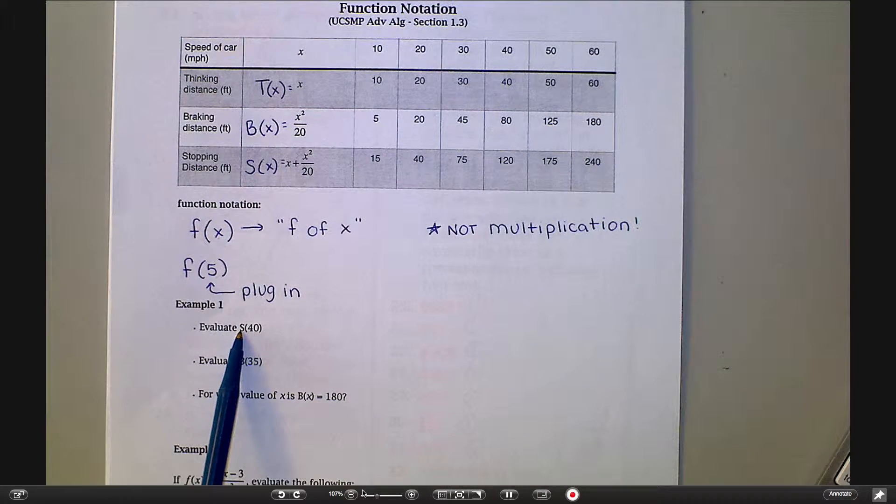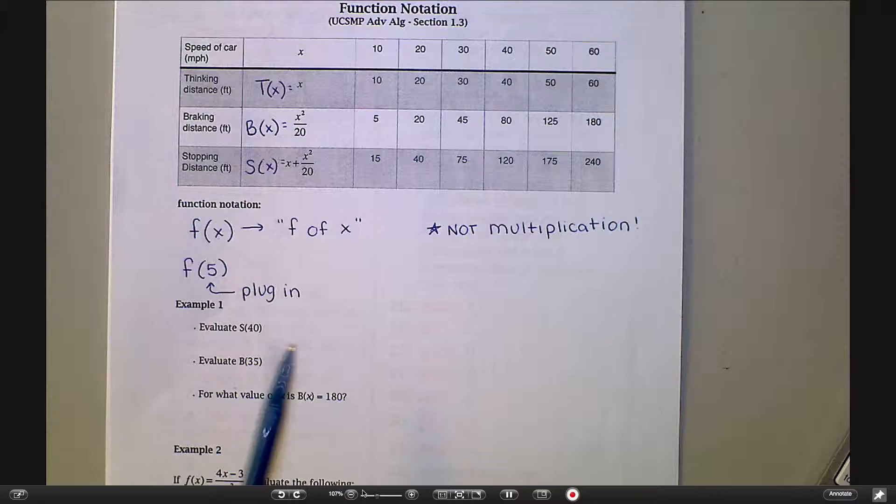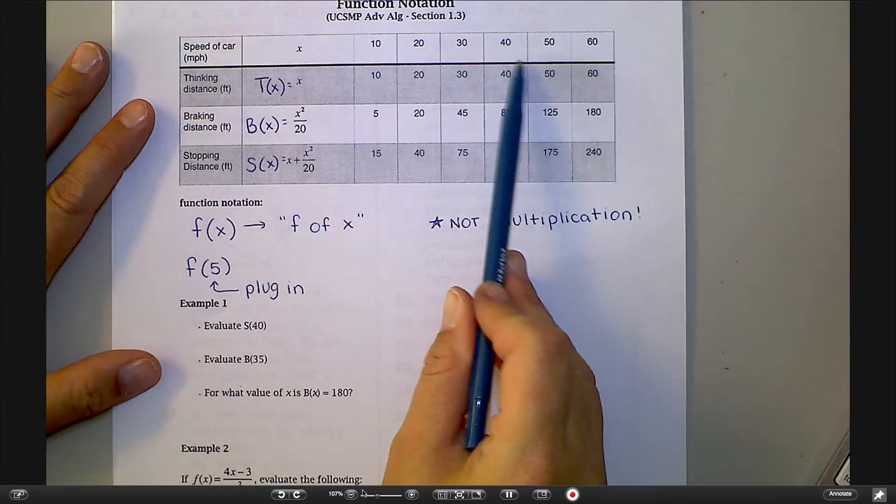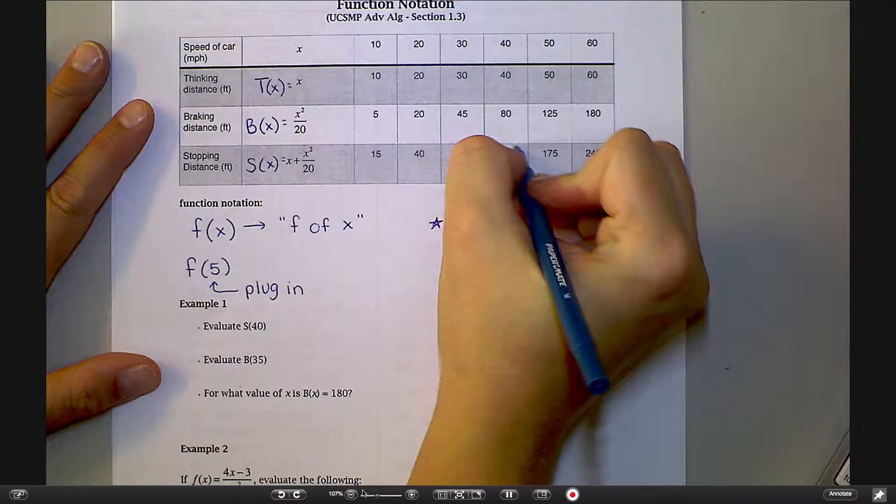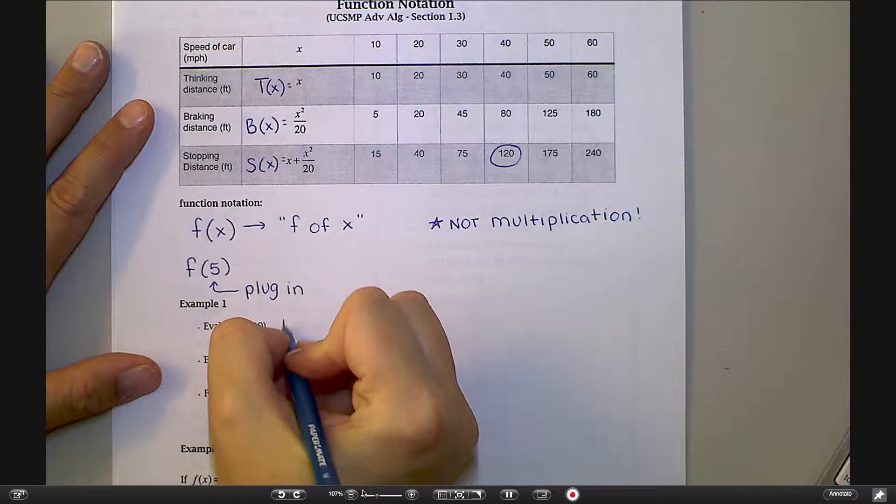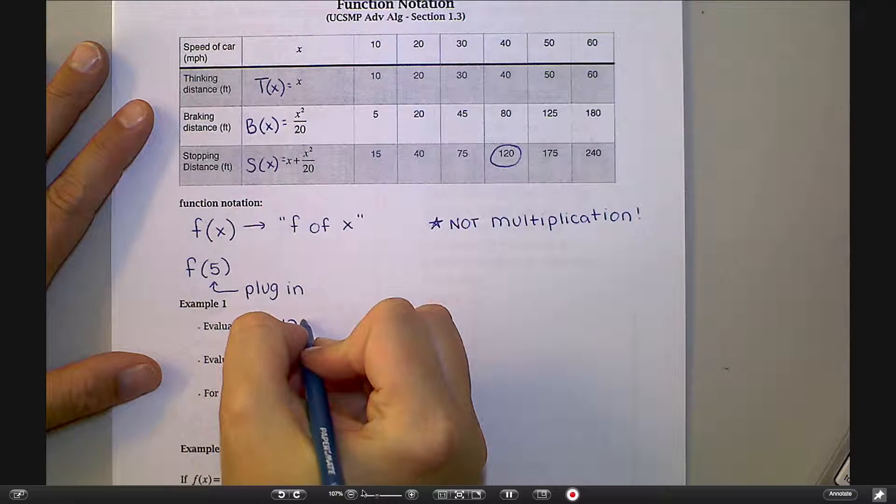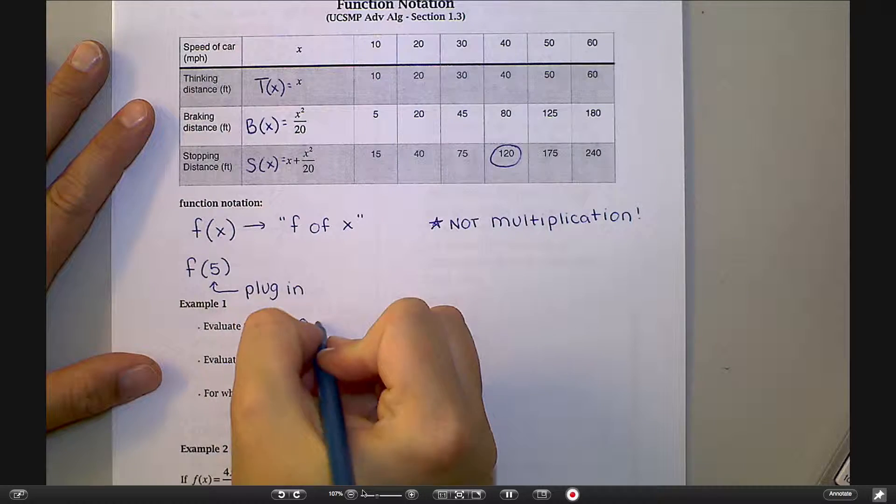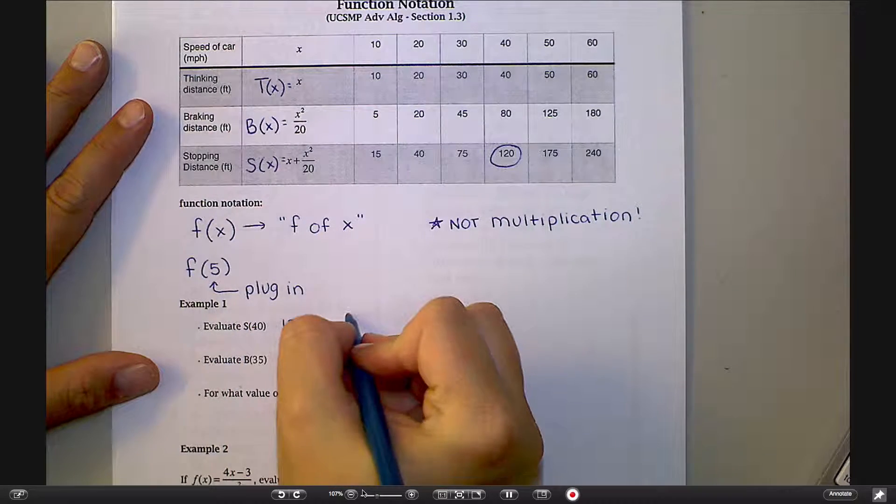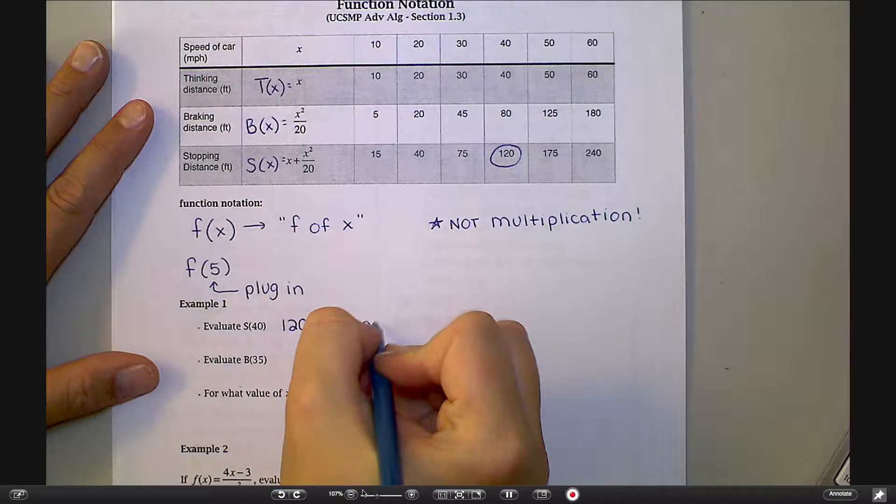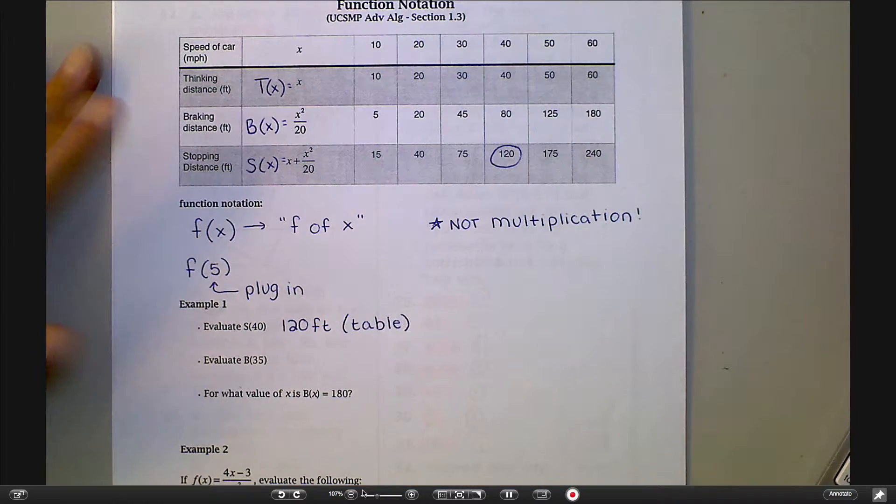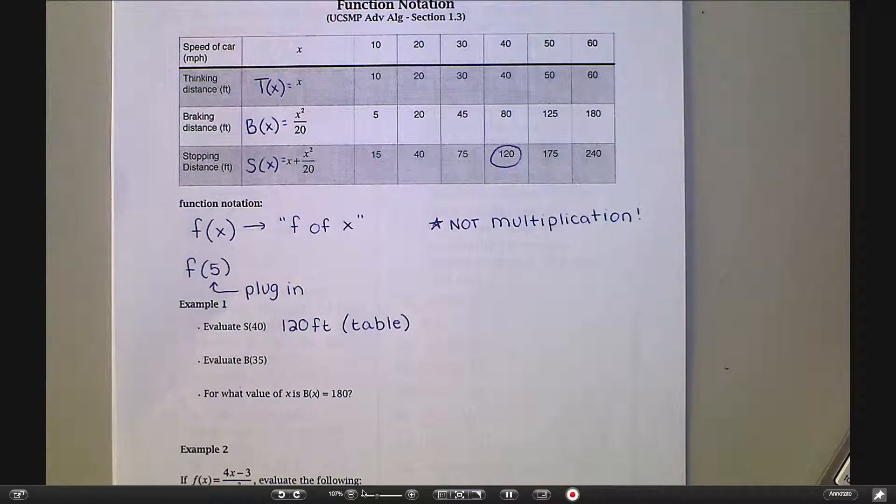So when I say evaluate s of 40, what am I really asking? I'm asking for the stopping distance at 40 miles an hour. What's the stopping distance at 40 miles an hour? If you've got this nice table in front of you, you should just be able to find it on your table. I'm at stopping distance, 40 miles an hour - answer would be 120 feet. These are all measured in feet. So that one came right from the table. Anyone see something else I could have done if I was too lazy to use the table?